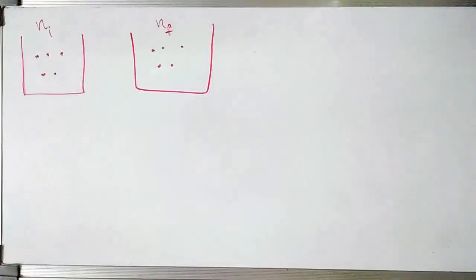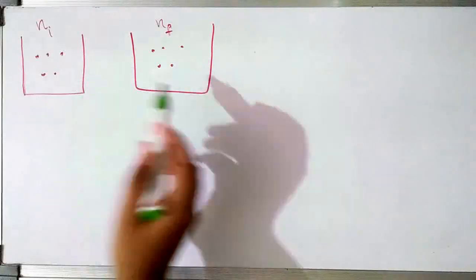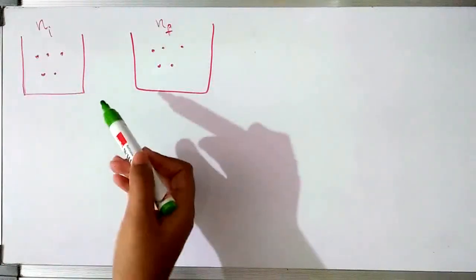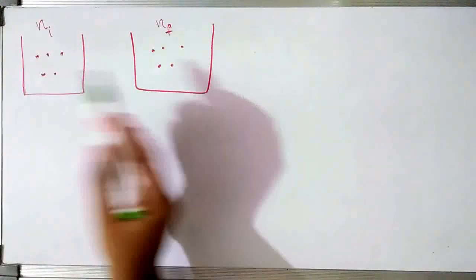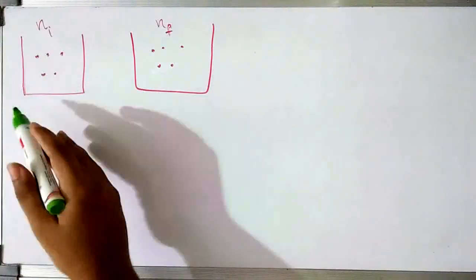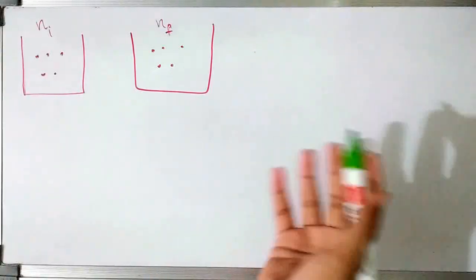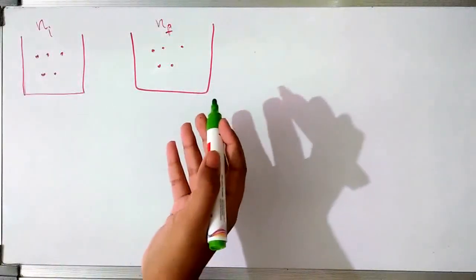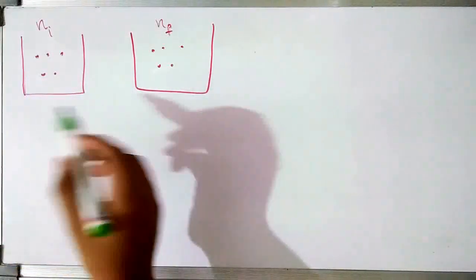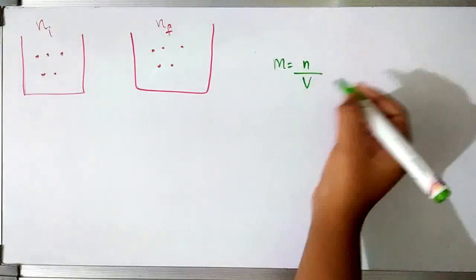Now let's see what happens when two quantities with different molarities are given. If you have two quantities where the number of moles of solute is the same — say 5 moles each — but the volumes are different, then the molarity will also be different in both cases because molarity depends on the volume of solution.